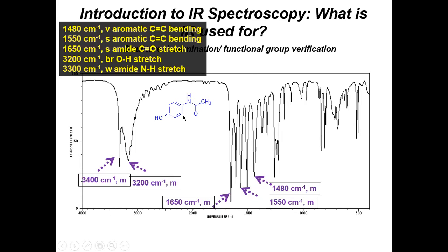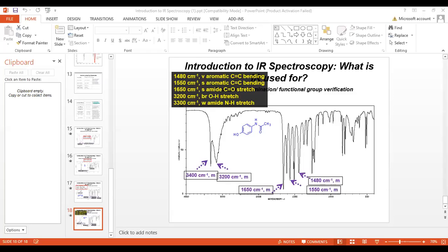Phenacetin, the precursor to acetaminophen: aromatic stretching is covered by the alcohol and amide stretches. The amide N-H stretch appears at 3400, the O-H at 3200, and at 1650 you have the amide C=O stretch. At 1480 and 1550 you have aromatic bending — a different molecular motion picked up at lower wavenumbers. Infrared is indispensable to the organic chemist, but you need another tool to confirm connectivity.